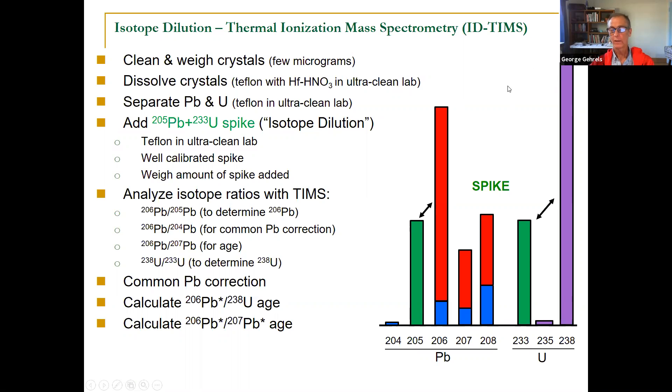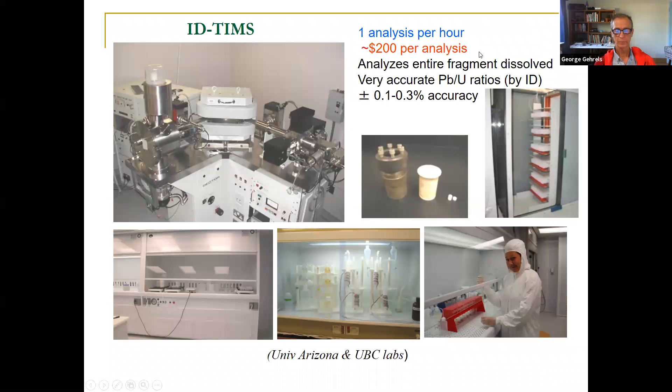So this is how we calibrate the ratio for 206, 238 that comes off the mass spec, which is incorrect. We do the correction based on the spike, which we know the isotope composition of. So this is what we call isotope dilution, thermal ionization mass spectrometry. And people can do this with amazing precision. You can do this such that you get a 206, 238 age down to a tenth of a percent or even less than that.